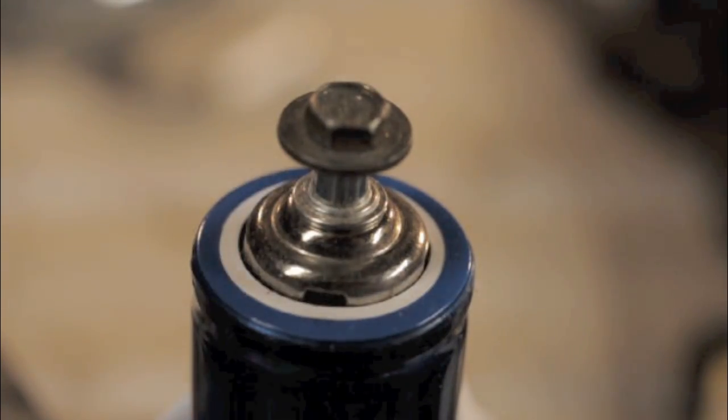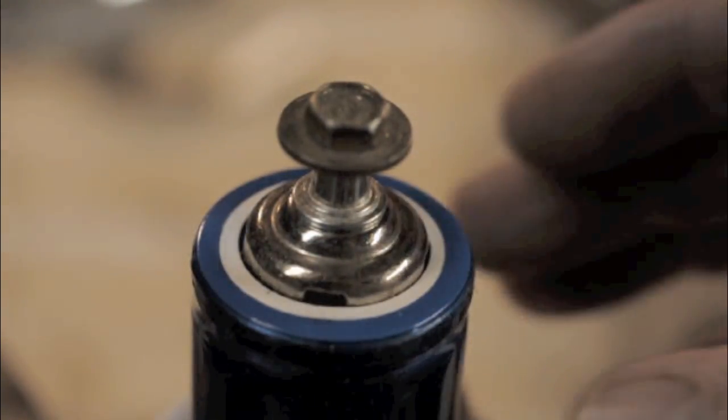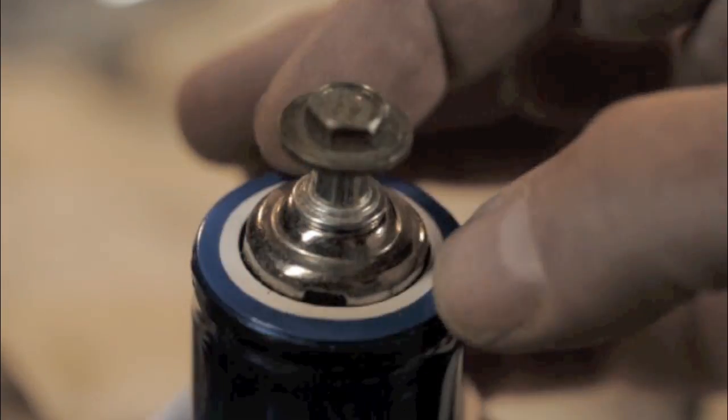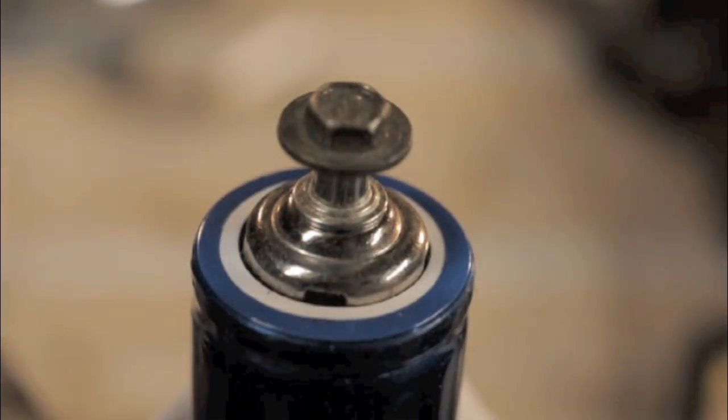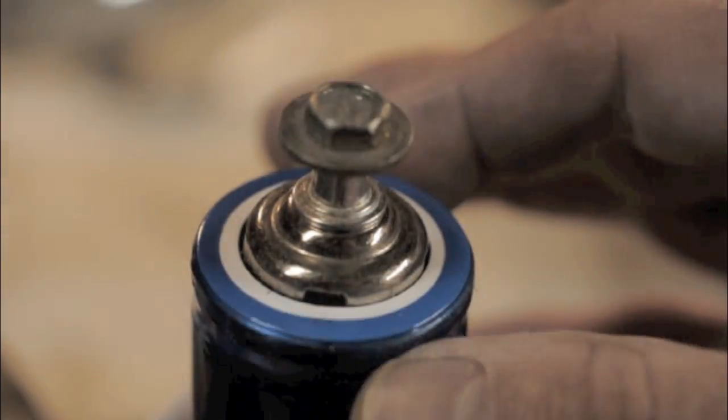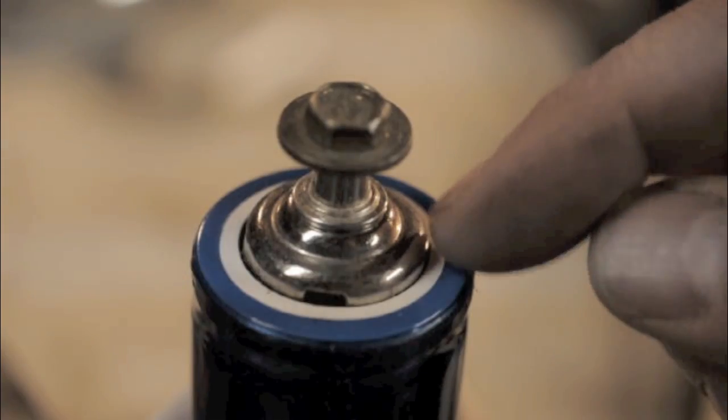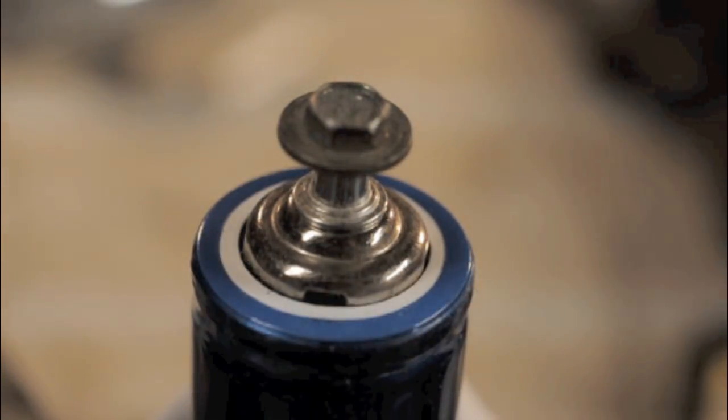I'm running this test because I've heard that you can spin the cap. It will separate right there if you apply too much torque, and that breaks the contact between the positive side of the battery and the core, which causes the battery to fail.